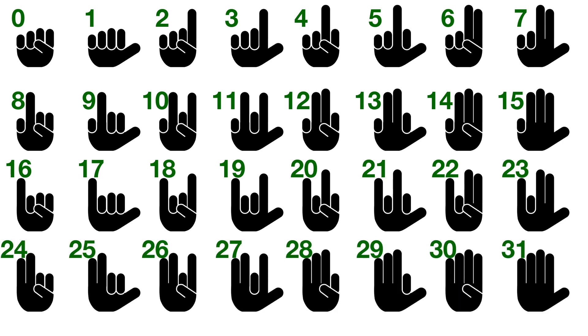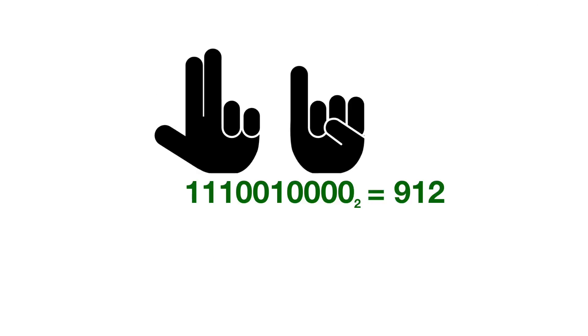Here's how we could count to 31 using base 2 counting on our fingers. If you use both hands, you can count all the way up to 1,023 with your fingers. For example, here's the number 1110010000, which works out to be 912 in base 10.